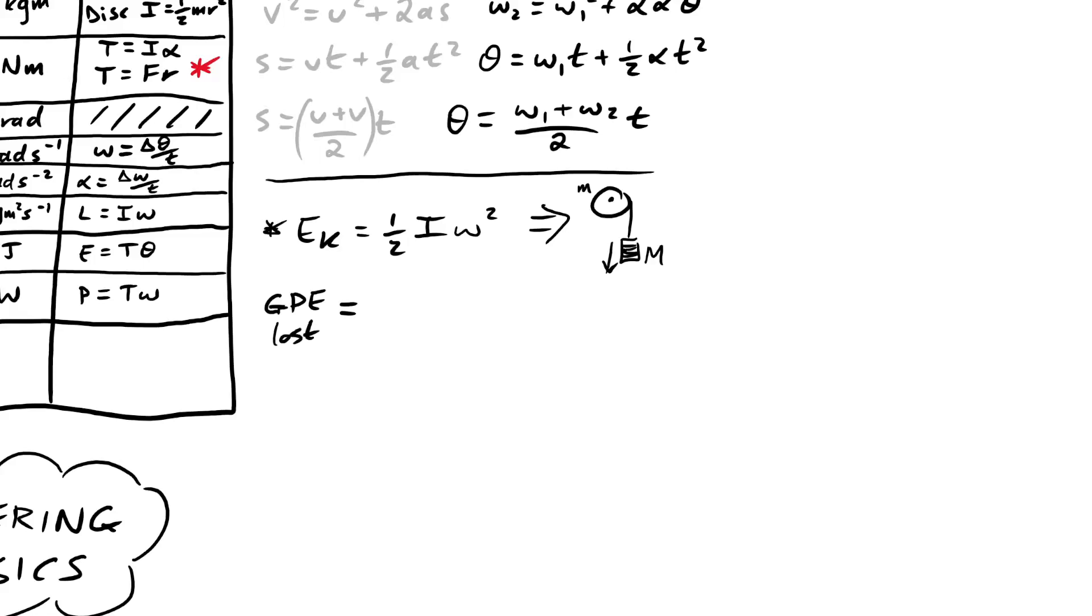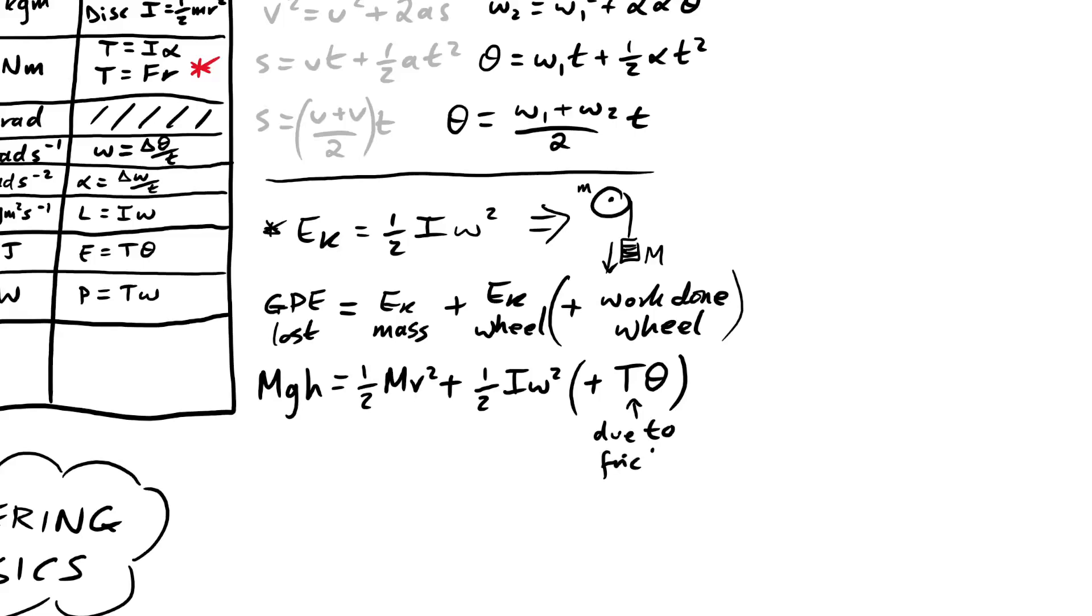Now we have this classic question here where we have a mass that is falling and it's on a string and it's making a wheel or pulley spin. I love asking you a question about this. All we can say in this case is that the GPE lost by the mass is being turned into the kinetic energy of the mass, of course, but also kinetic energy of the wheel. And possibly if there's friction, then the work done due to friction. So we can say MGH for the mass is equal to half mv squared for the mass plus half I omega squared for the wheel. And then if there is friction, then we can say that's plus T theta.